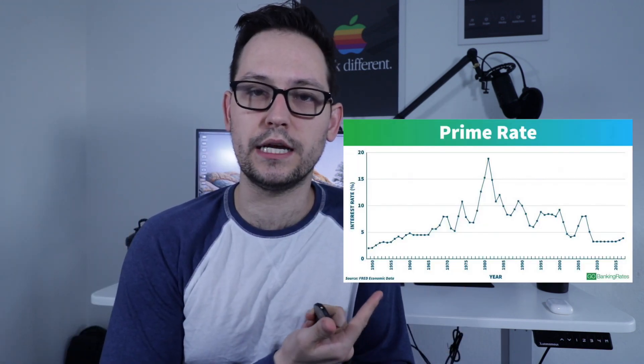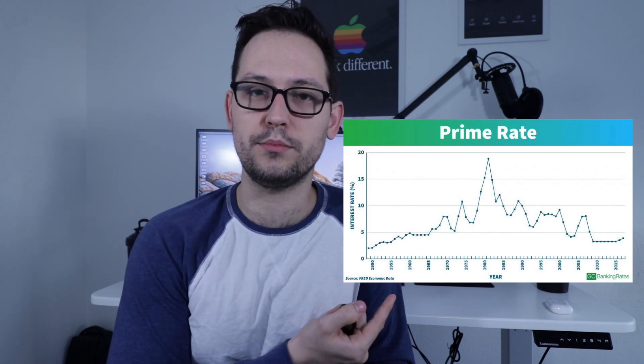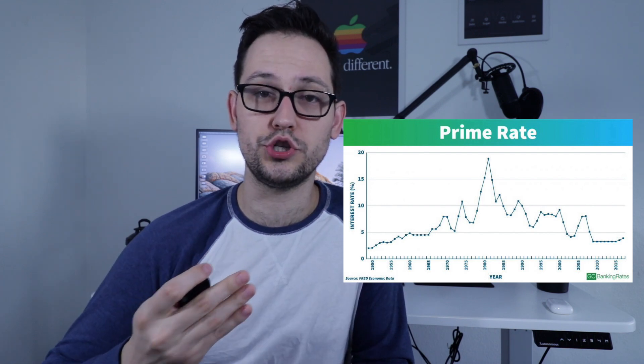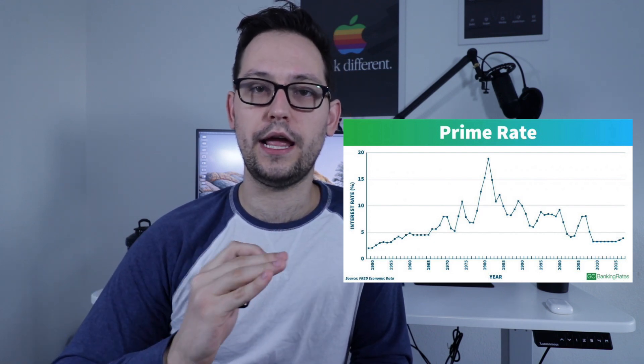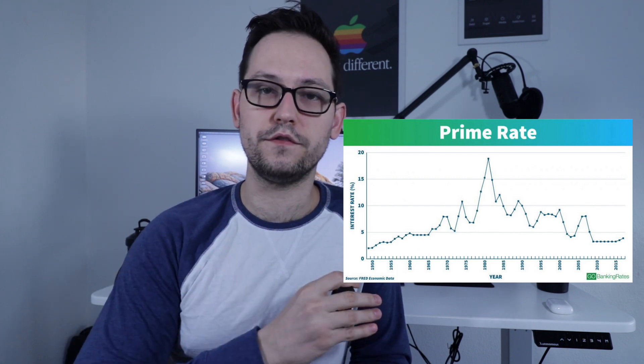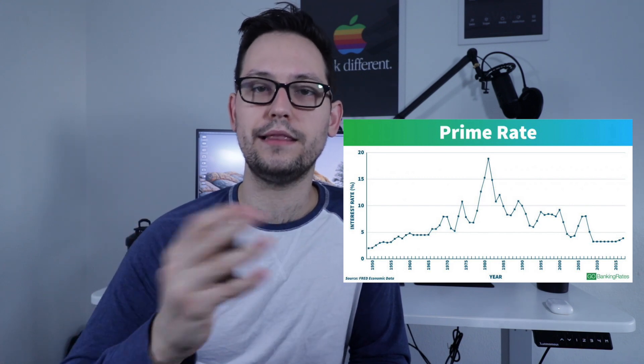I'm going to throw up a graph here for a second. As you can see, throughout most of the late 1900s, the interest rate on normal savings accounts was between 5% and 20%. This is really important because it means that if you want to retire, you could just go to a bank, get a savings account, put your money in there, and at the end of your career you'd be able to retire off of that 5 to 20% interest rate. It's extra low risk because the government actually insures part of that money through FDIC insurance laws.